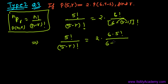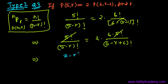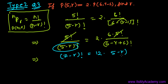So the denominator on the right becomes (6 minus R plus 1) factorial. Now the 5 factorial on both sides can be cancelled. We are left with (6 minus R plus 1), which simplifies to (7 minus R) factorial on the right side, and (5 minus R) factorial moves to the left.